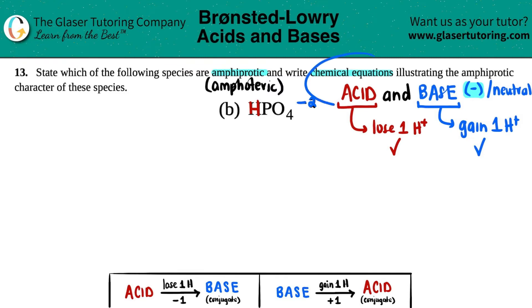So HPO4 2- has both acid and base properties, so it would be classified as amphiprotic or amphoteric. Now we just have to write chemical equations. We're going to do this twice—twice is nice.